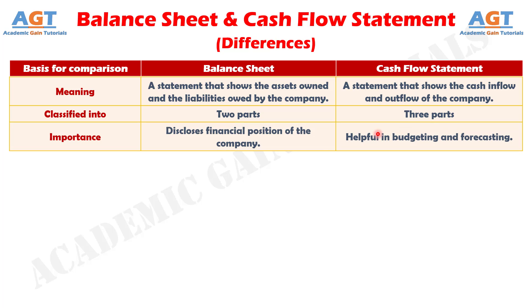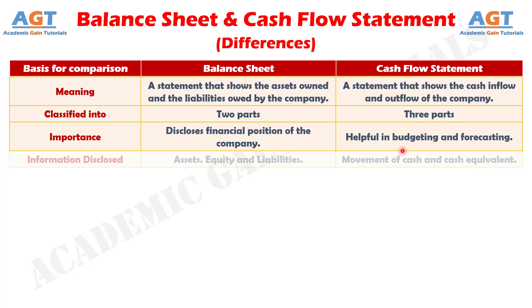No. 3: The Balance Sheet provides the information about the company's financial position. On the contrary, Cash Flow Statement provides the information about the company's liquidity and stability.